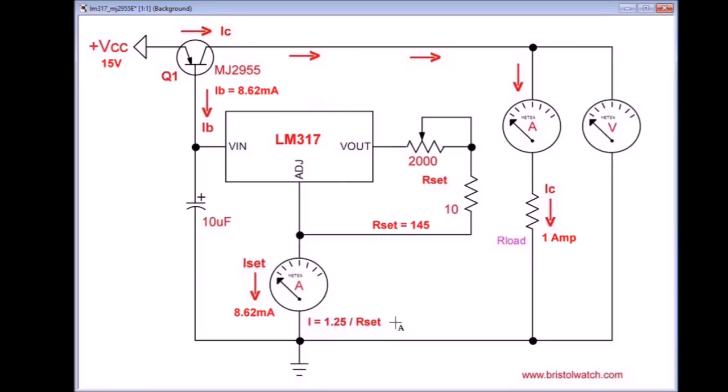These were actual measured voltages. R set was adjusted to 145 ohms. This gave me an ISET measured through this meter of 8.62 milliamps. But ISET is the same thing as IB, which is also 8.62 milliamps.